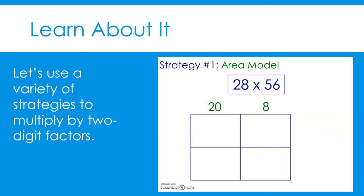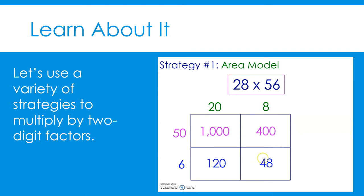Now, let's write each value in 56 next to the rows in the area model. 56 is equal to 50 and 6. Note that our second factor, 56, is color-coded: the tens value, 50, is purple, and the ones value, 6, is blue. Now it's time to multiply. Let's begin by multiplying 28 by 50. 20 times 50 equals 1,000. 8 times 50 equals 400. Those two values together are equivalent to 28 times 50. Now, let's multiply 28 times 6. 20 times 6 equals 120. 8 times 6 equals 48. Those two values in blue are equivalent to 28 times 6.